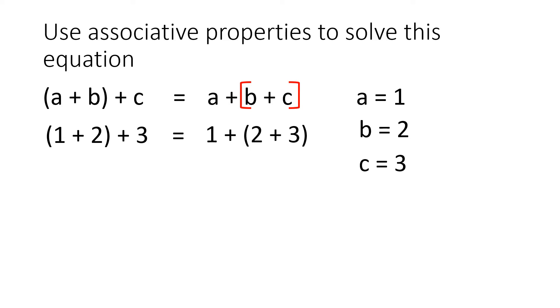And let's solve. 1 plus 2 equals 3, plus 3 equals 6. 2 plus 3 equals 5, and 3 plus 3 equals 6. 1 plus 5 equals 6. No matter what numbers you use, they're always going to be equal. This is how we use associative properties.